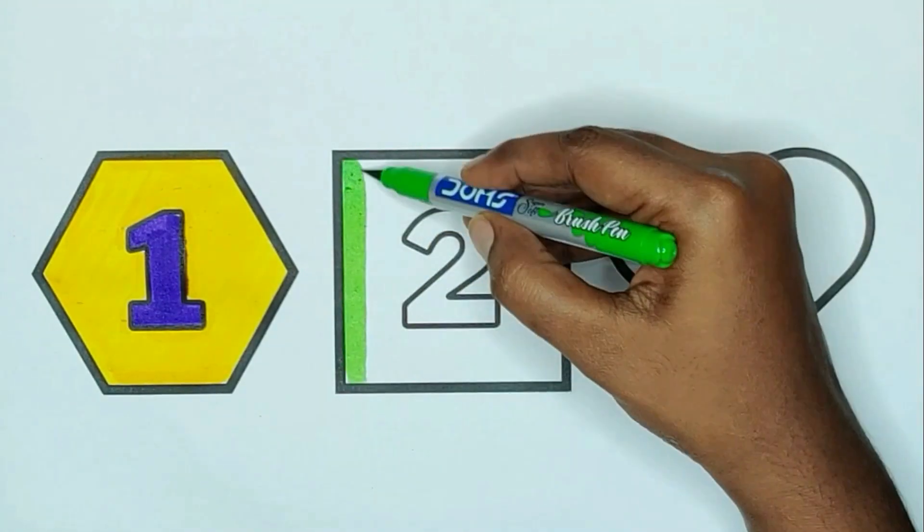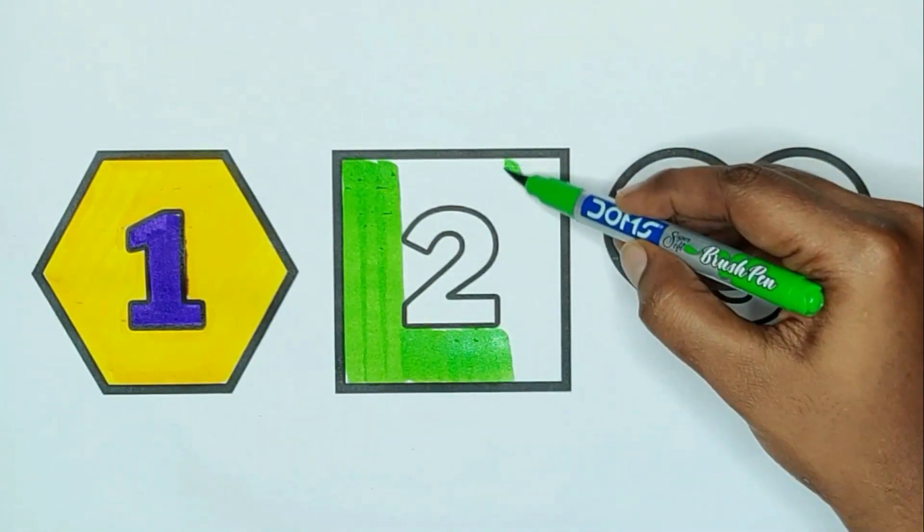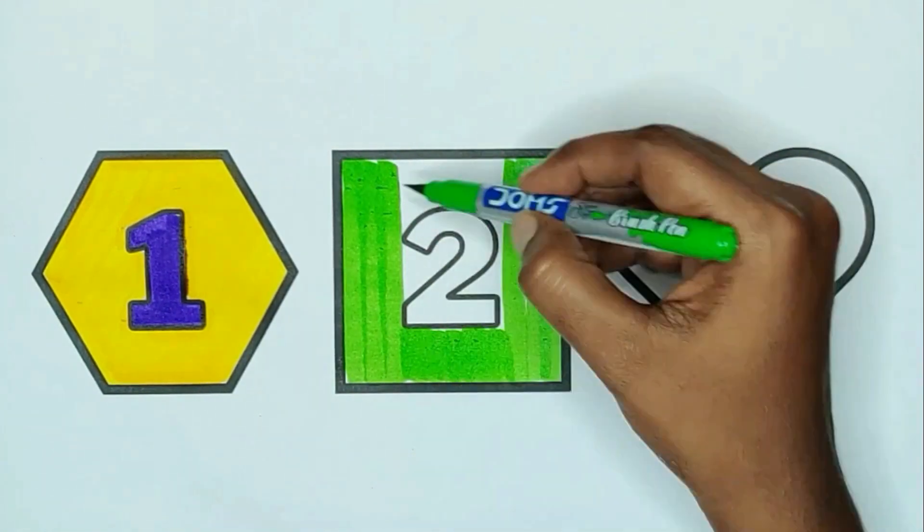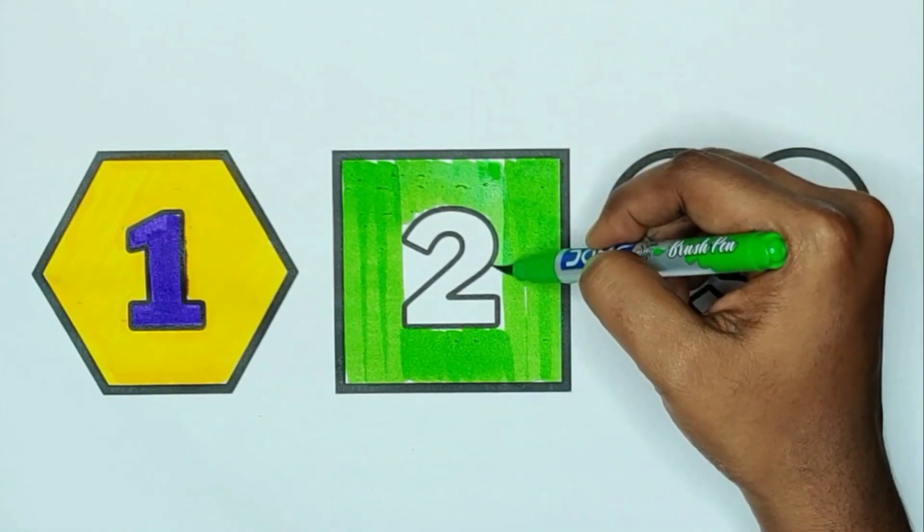Green color, square. The shape is square. Green color, square.